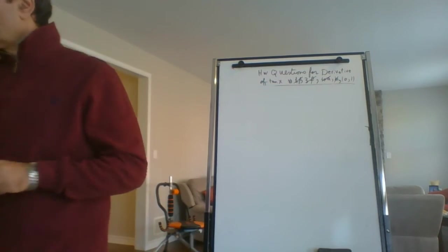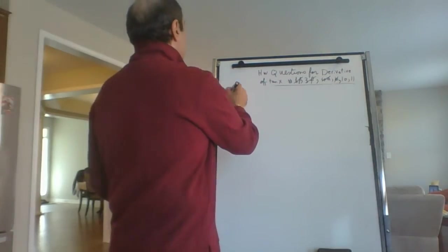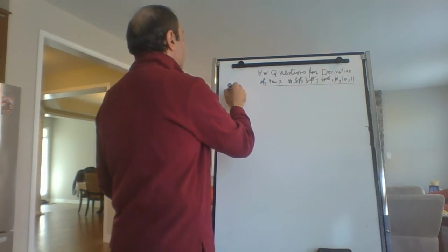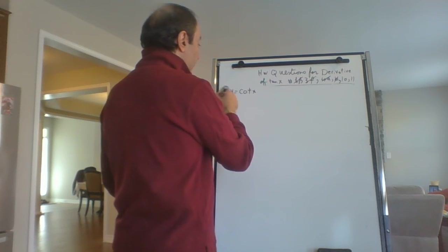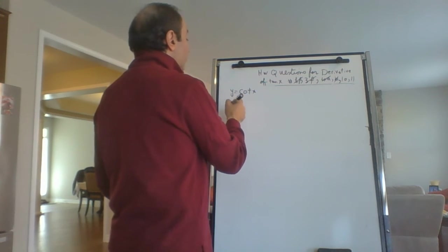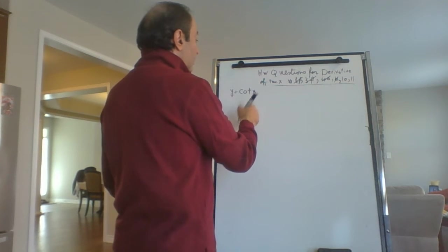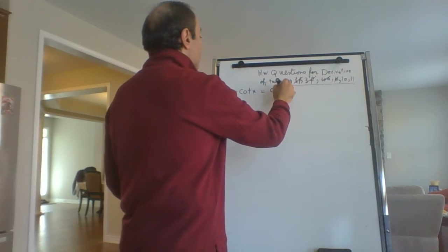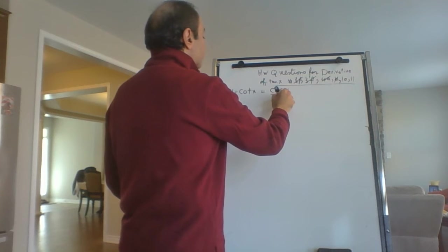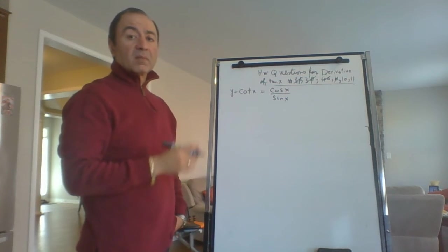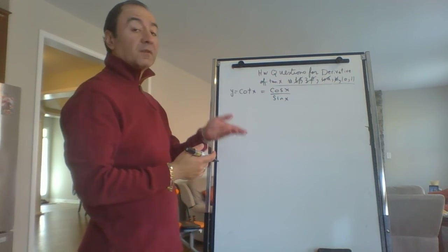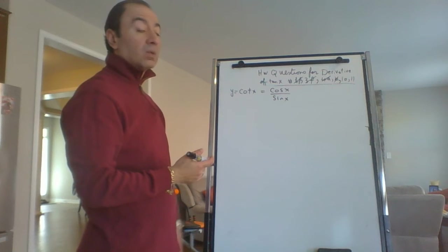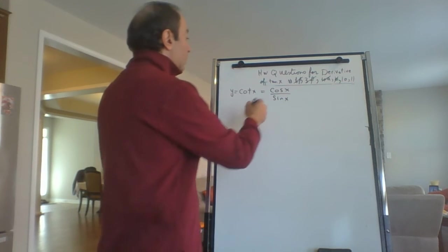Now I need to do number 10. We need to find the derivative of cot(x). We don't know the derivative of cot directly, but we can write cot as 1 over tan, or we can write it as cosine over sine. We'll use the same approach we used to prove that the derivative of tan x is secant squared.